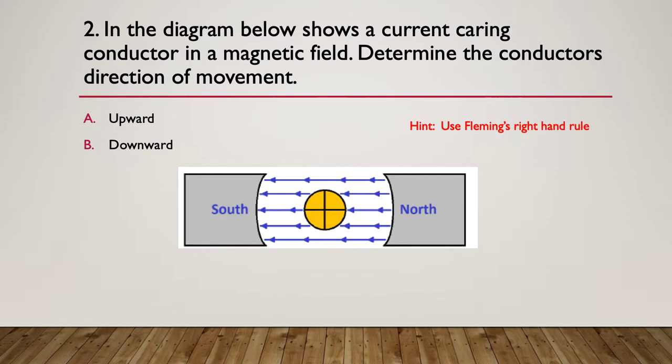Here's the hint again. Use Fleming's right-hand rule. In this case the current is flowing away from us because we can see the back of the arrow and the magnetic field is travelling right to left this time. And the answer is downward again.